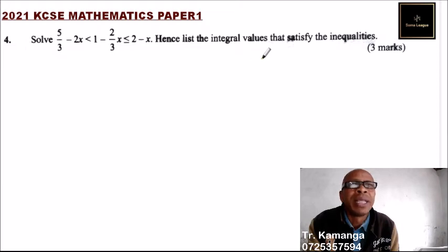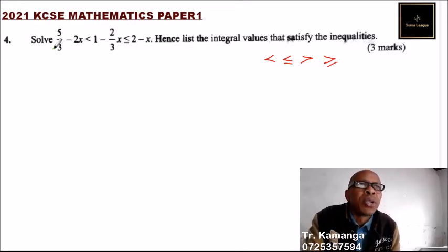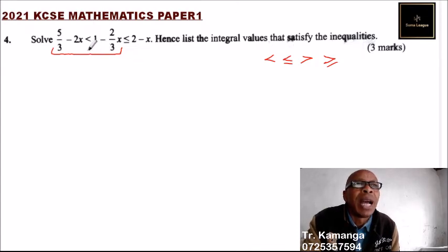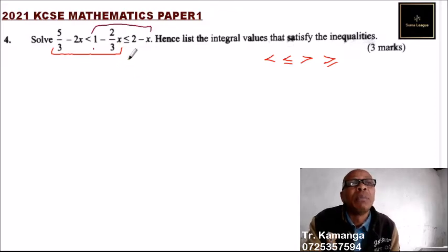When dealing with inequalities, we have less than, less than or equals to, greater than, and greater than or equals to. To get the integral values, we first solve this part — the left inequality — to get the value of x, and then we take the other inequality, those two, and solve them separately. Then we combine x to get the integral values.